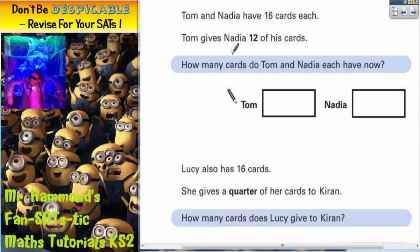and Tom gives Nadia 12 of his cards, Nadia will then have her original 16 cards plus an extra 12 because she's gaining 12 of Tom's cards.